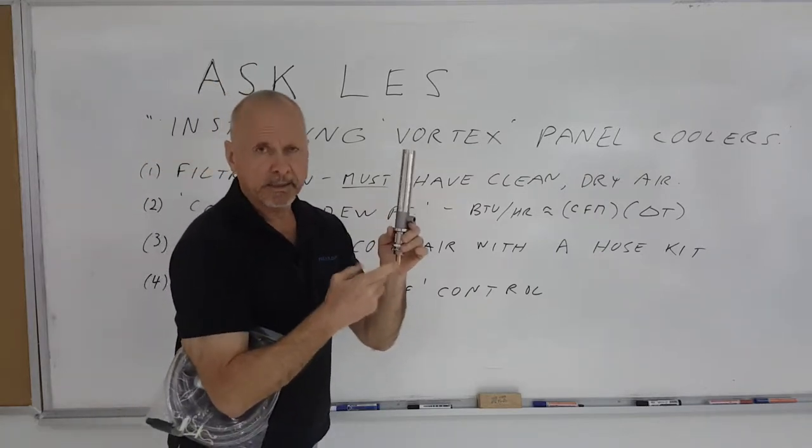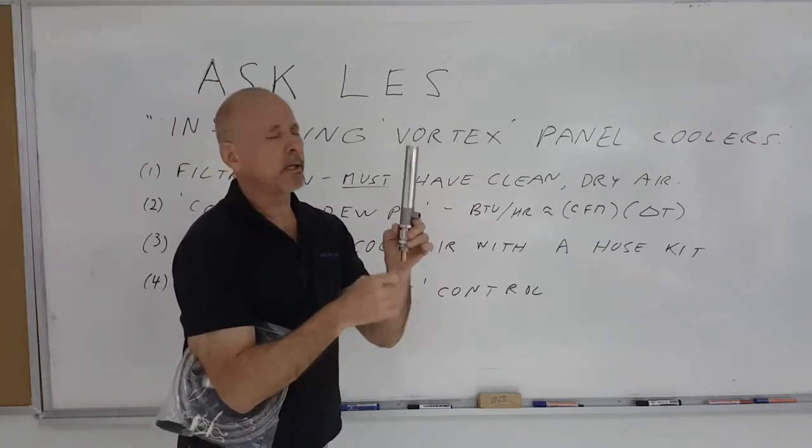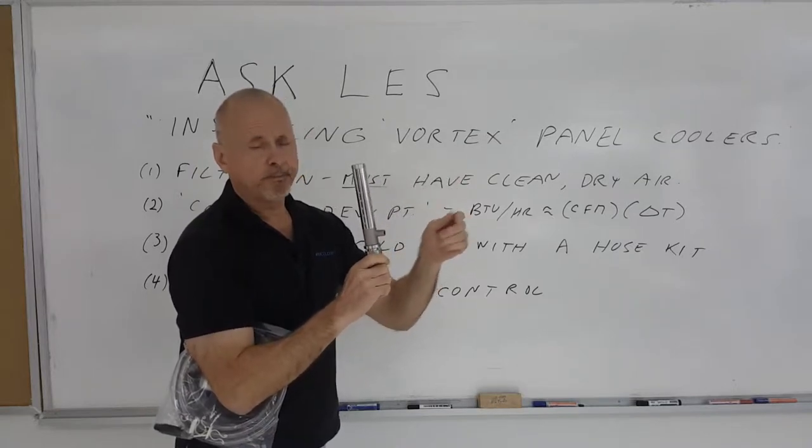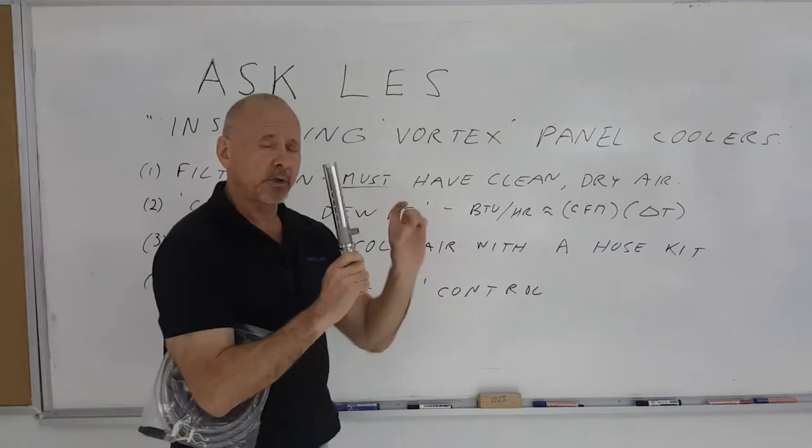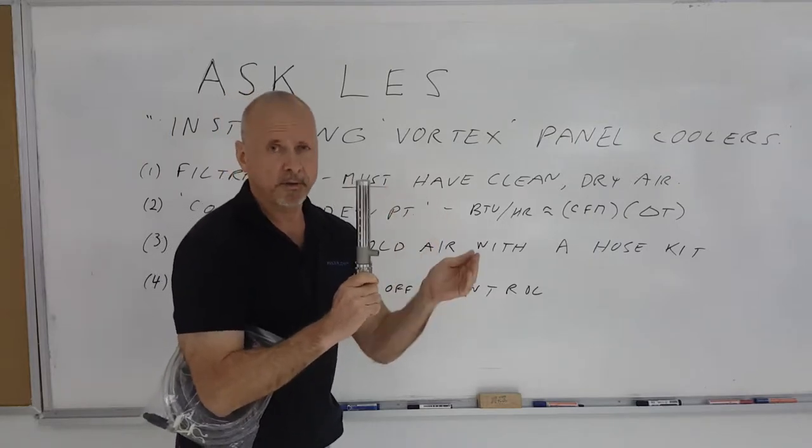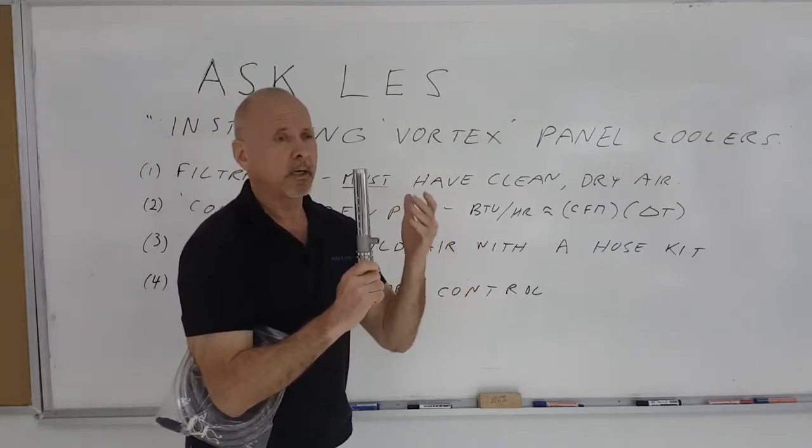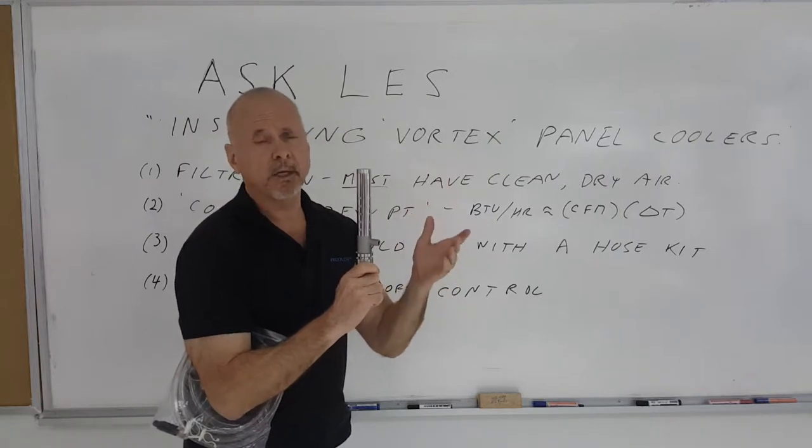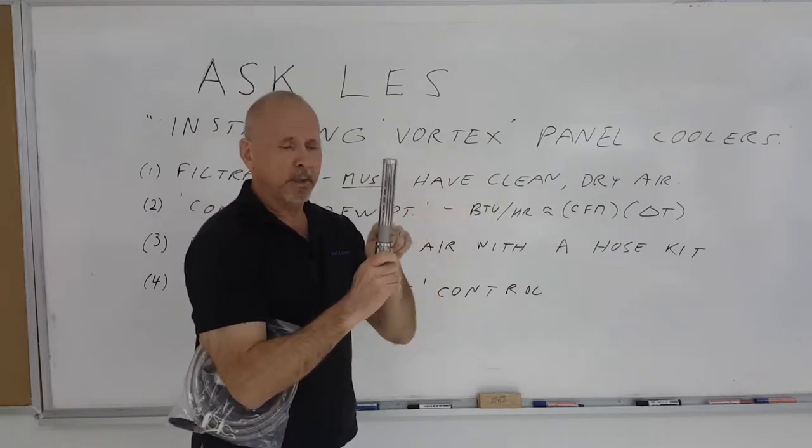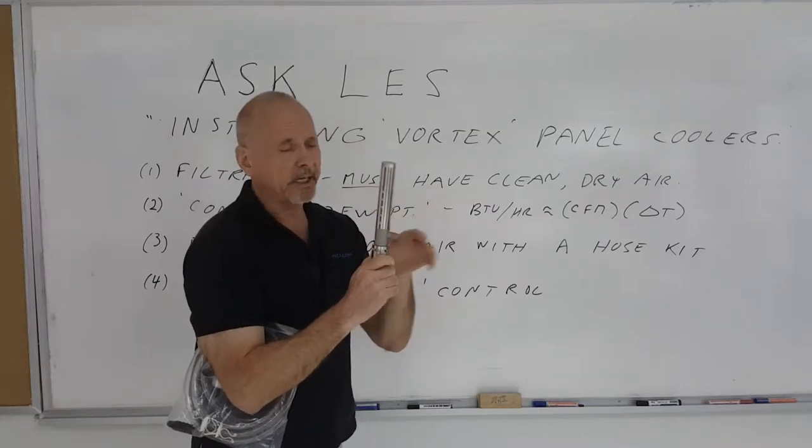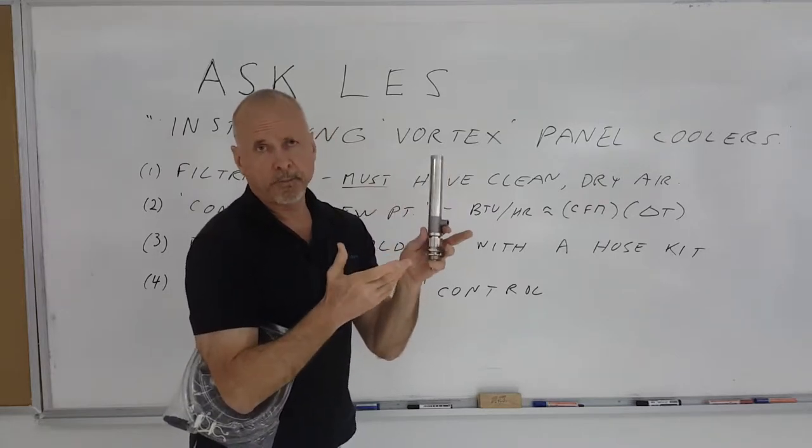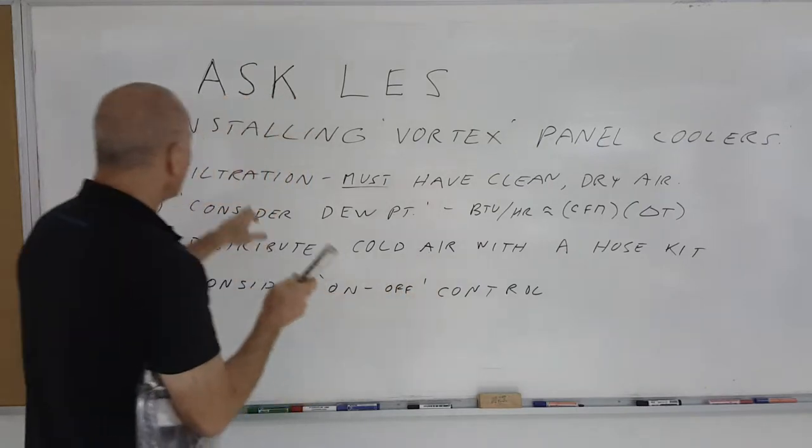Now for oil, if you have oil in the compressed air lines, you should have an oil removal filter and we recommend at least oil removal down to 0.3 microns. Otherwise, the oil will go into the panel cooler and start building up on the inside and eventually clog the cooler. You don't want that, so good filtration.